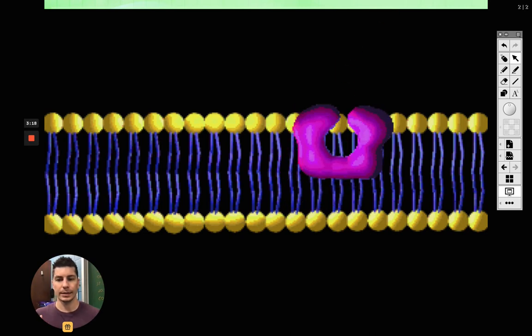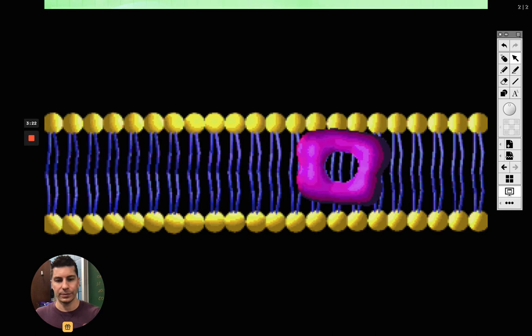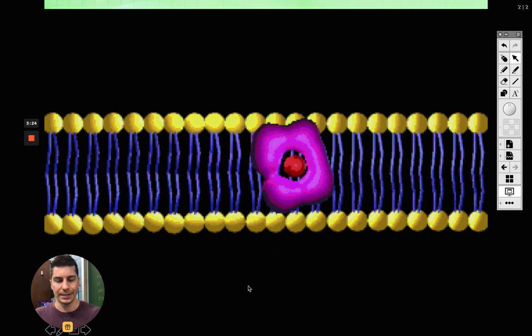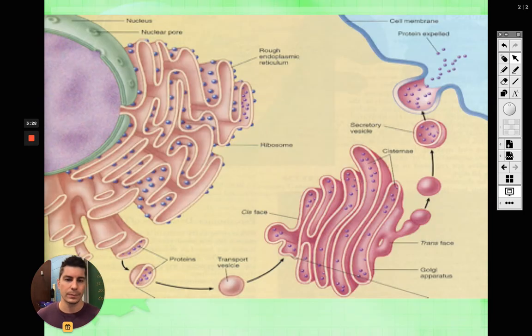So what we're going to talk about in this chapter, guys, is things moving into the cell and things moving out of the cell. Here's a little animation of something moving - well, the bottom down here is inside of the cell, it'd be something moving out of the cell.